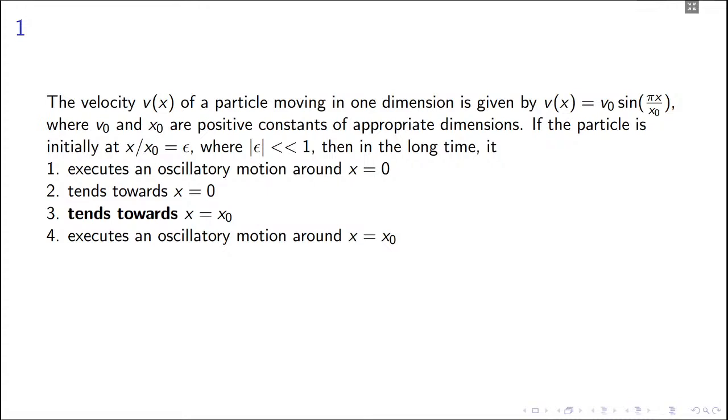The official key says that in the long term, the particle will tend towards x equal to x₀. However, this is not completely right because they have said nothing about the sign of ε. This option is correct if ε is positive, but ε can also be a small negative quantity, then this option does not hold.